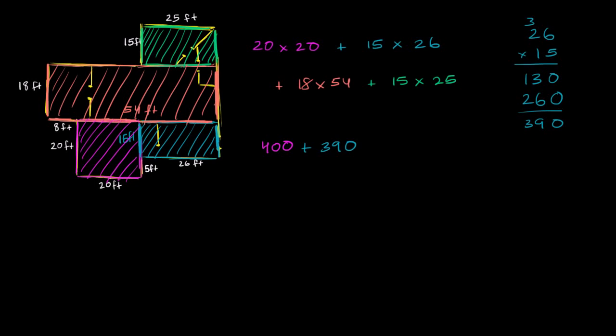So it's 400 plus 390. Now we've got to multiply 18 times 54, or 54 times 18. So let's do that. 54 times 18. 8 times 4 is 32. 8 times 5 is 40, plus 3 is 43.